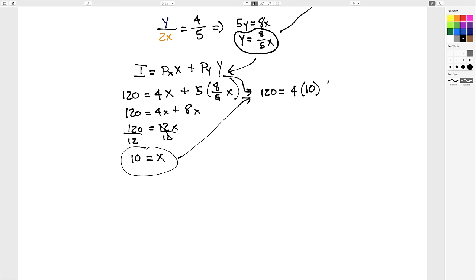Times, we now have a value for X, which is 10, plus price of Y is 5, times Y. Now let's solve and see how many hamburgers, or units of good Y, is going to maximize our utility.